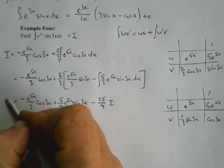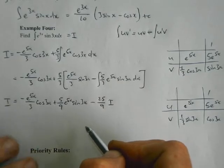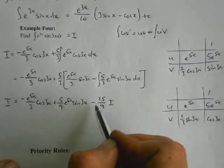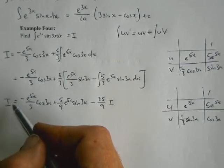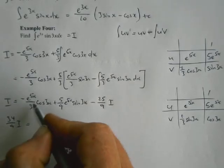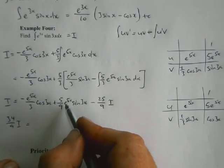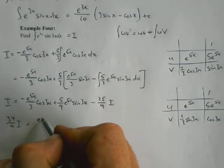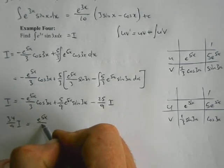And this thing here, this integral here, is just what I started off with. So my integral I equals all that lot. Bringing this stuff over to here, it's nine ninths plus another 25 ninths, which is 34 ninths. So I've got 34 ninths of I equals this stuff here.